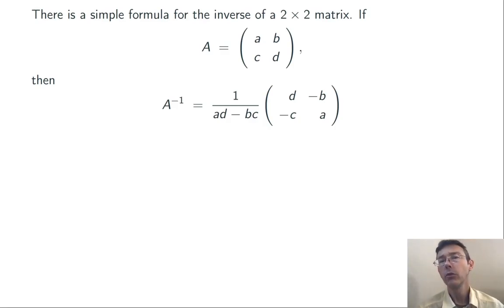When you're dealing with 2 by 2 matrices, there's a very simple formula for the matrix inverse. If the matrix is [a, b; c, d], then the inverse is going to be 1/(ad - bc) times [d, -b; -c, a].